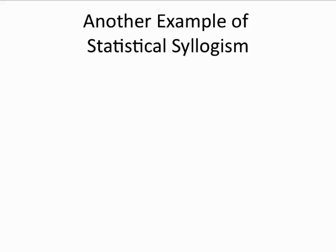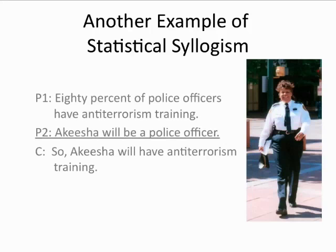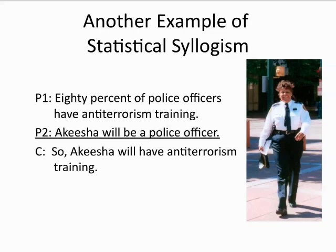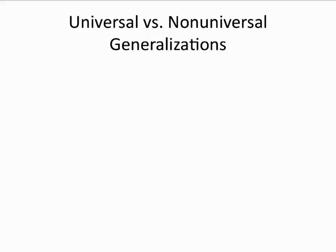Here's another example of a statistical syllogism: 80% of police officers have anti-terrorism training. Premise two: Akisha will be a police officer. Conclusion: so Akisha will have anti-terrorism training. Notice that we have merely substituted a percentage — 80% — for the word 'many,' but it's still a non-universal generalization.